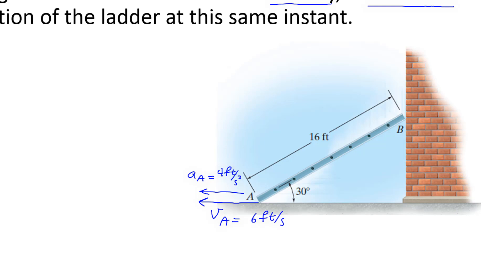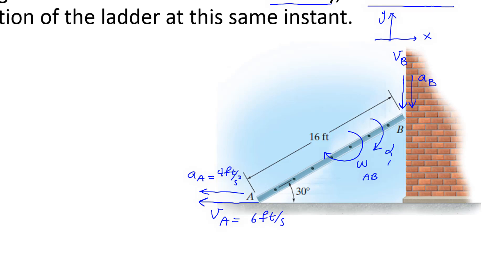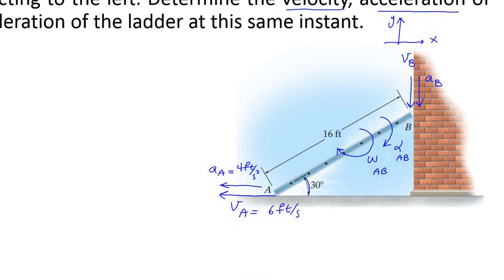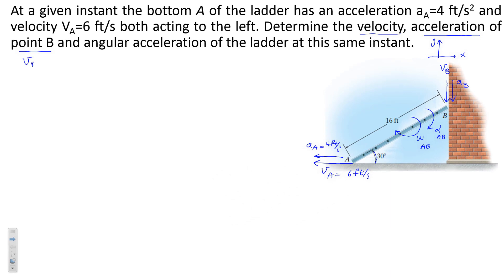If the ladder moves to the left at point A, then we will have VB in the negative y-direction — this is x and this is the y direction. We do not have any idea about the direction of acceleration for point B; let's consider it the same as the velocity direction. When we have motion to the left, that gives angular velocity in the clockwise direction. We also do not have any idea about the alpha direction, so we consider it the same as omega. The angle here is 30 degrees.